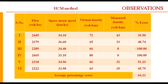The Highway Capacity Manual method gives very misleading results because it takes a snapshot at the midpoint of the counting period and counts the number of vehicles as the density. Comparing virtual density with measured density from the snapshot, the error varies from 39% to 100%, and there could be situations where there is no vehicle in the trap at all.